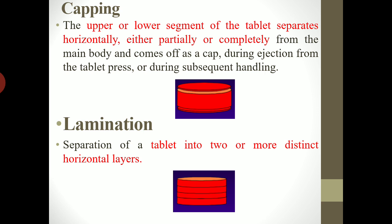Now we will go through capping, lamination, cracking, and chipping in detail. Capping is when the upper or lower segment of the tablet separates horizontally, either partially or completely, from the main body and comes off as a cap during ejection from the tablet press or during subsequent handling. The upper or lower cap of the tablet will be separated completely or partially, and this defect can occur during ejection — that means immediately after compression.